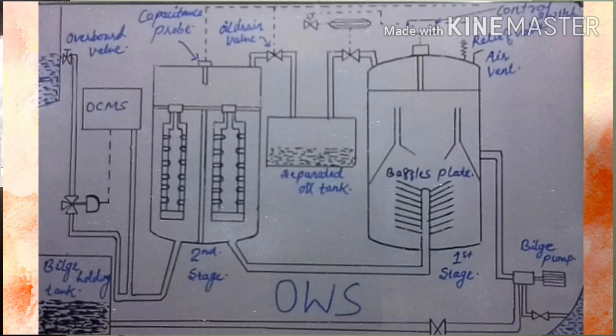What are the maintenance requirements for oil water separators? First of all, there are no such specific maintenance requirements on the oil water separators. Why? Because the moving parts in this machinery are very few, so there is less wear and tear. But still, some maintenance is always required for running machinery, because OWS is a running machinery. So there are the following checks and maintenance which are carried out in the oil water separators.